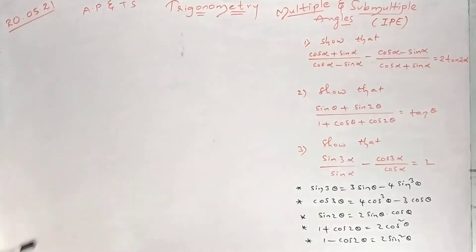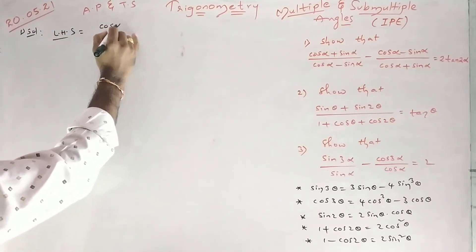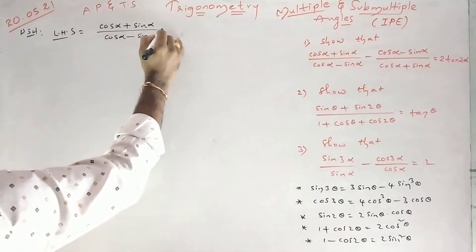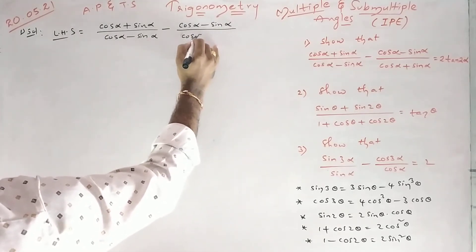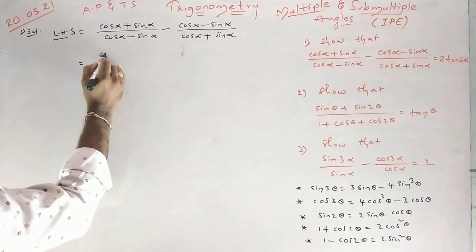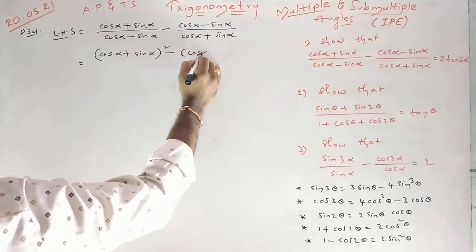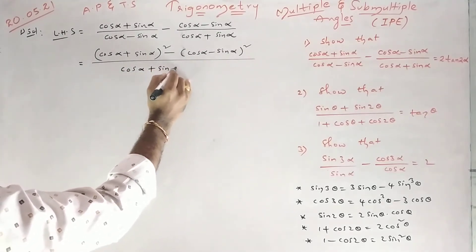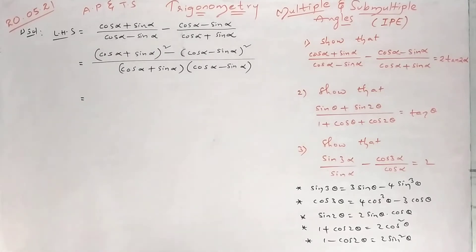First I will take the first solution. Take LHS: (cosα + sinα)/(cosα − sinα) minus (cosα − sinα)/(cosα + sinα). Take LCM now — this one into this one gives the same terms. So the numerator is (cosα + sinα)² minus (cosα − sinα)² over (cosα + sinα)(cosα − sinα).